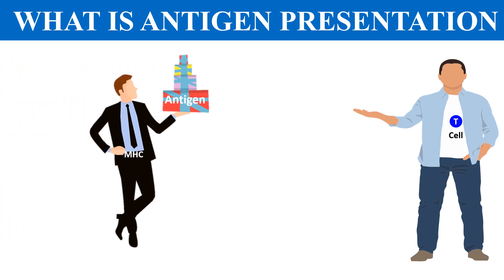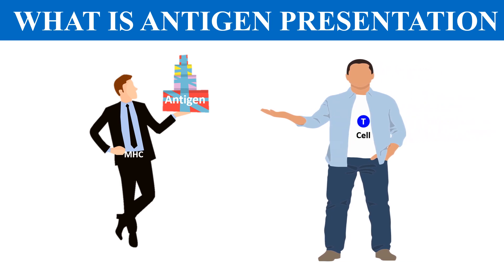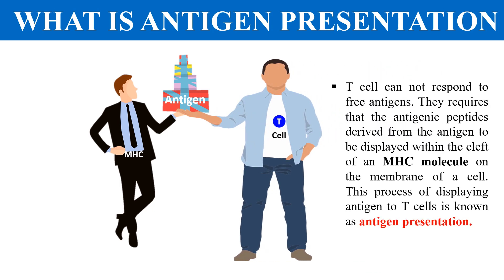So if the antigen comes along with MHC — here in this diagram, this dummy man represents the MHC molecule and it carries the antigen on its hand — so when the antigen comes with MHC, only in that case the T cells will recognize and bind to the antigen. Once they bind to the antigen, they will show the immune response. So the process by which the antigen and MHC complex is recognized by the T cells is known as antigen presentation.